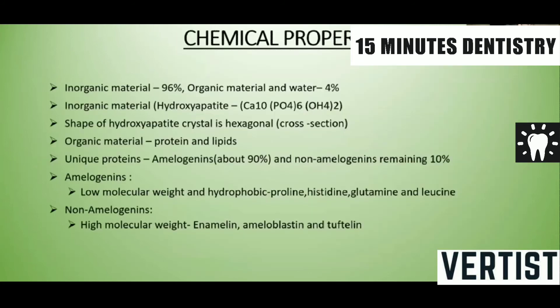The chemical properties of enamel: enamel consists of 96% inorganic material and 4% organic material and water. The inorganic material is in the form of hydroxyapatite crystals, and these crystals appear hexagonal in cross-section. The organic material is basically protein and lipids.